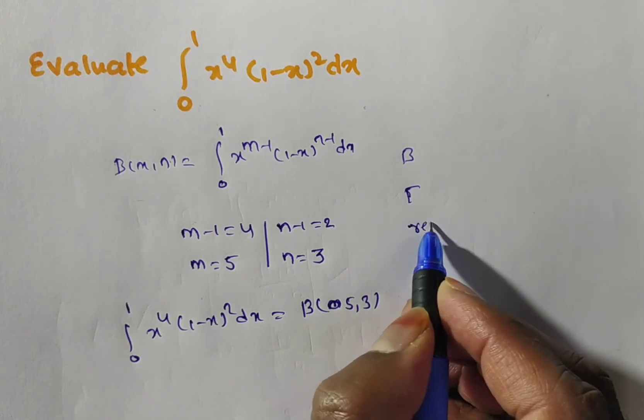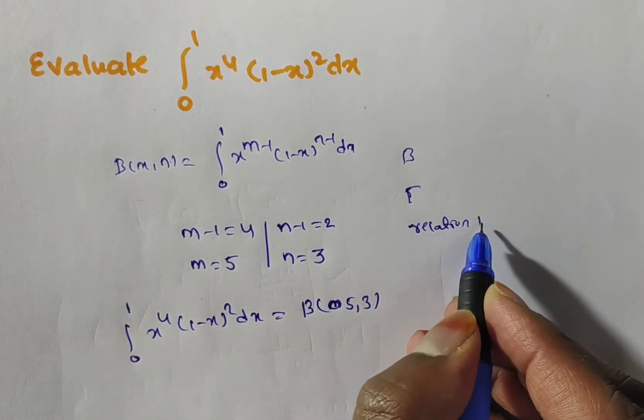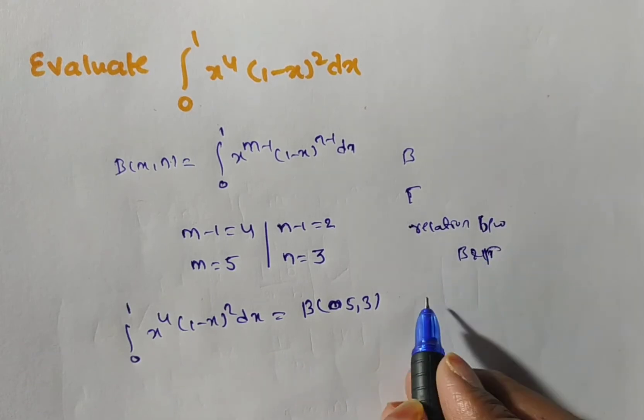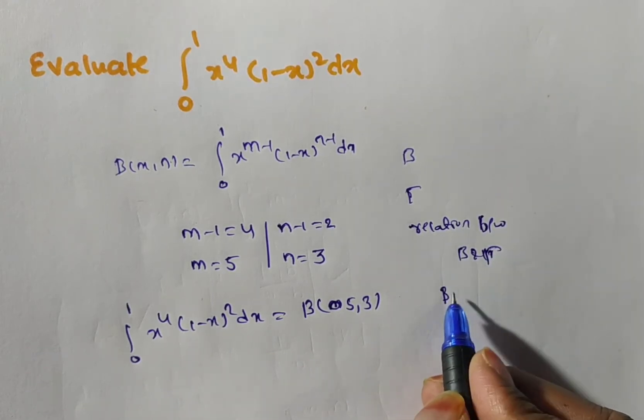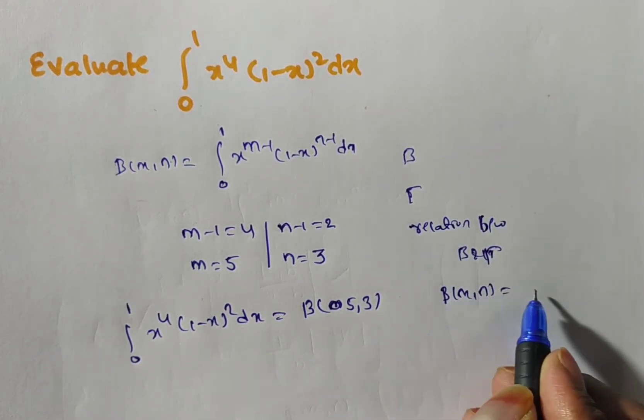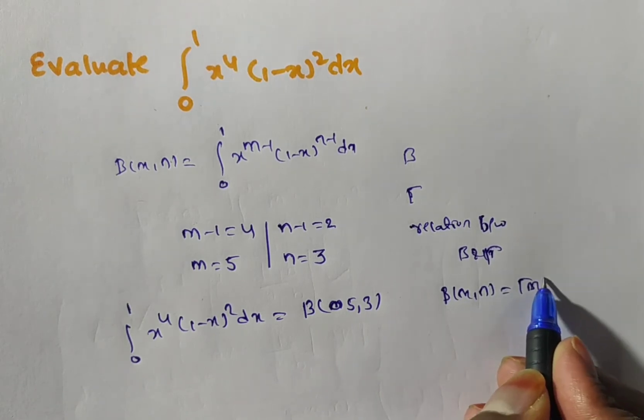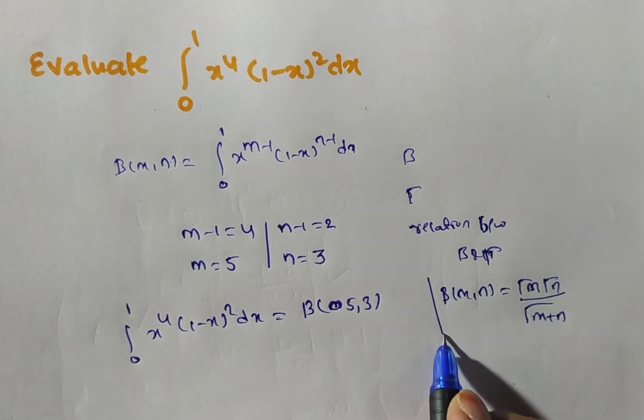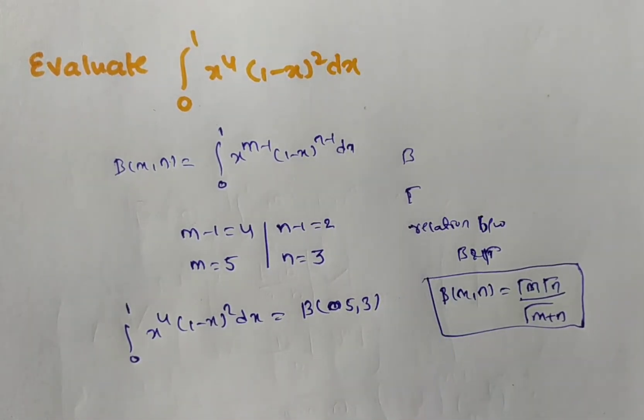It means the relation between beta and gamma. That is, we have beta of m comma n is equal to gamma m, gamma n divided by gamma of m plus n. Friends, this proof already we are done.